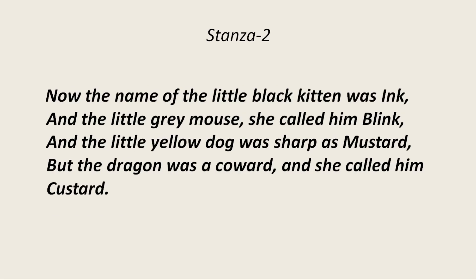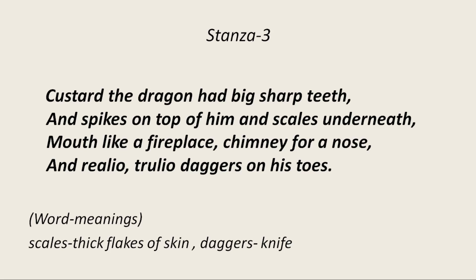The little black kitten's name was Ink, and she called the little gray mouse Blink. The little yellow dog was sharp as mustard — his color was yellow just like a grain of mustard and he was very sharp, so he was named Mustard. But the dragon was a coward, and she called him Custard. Usually a dragon is huge, fierce, and powerful, but in this poem everyone thinks the dragon is a coward. Since he's a coward, she calls him Custard in a funny way. But was he really a coward? We'll find out.